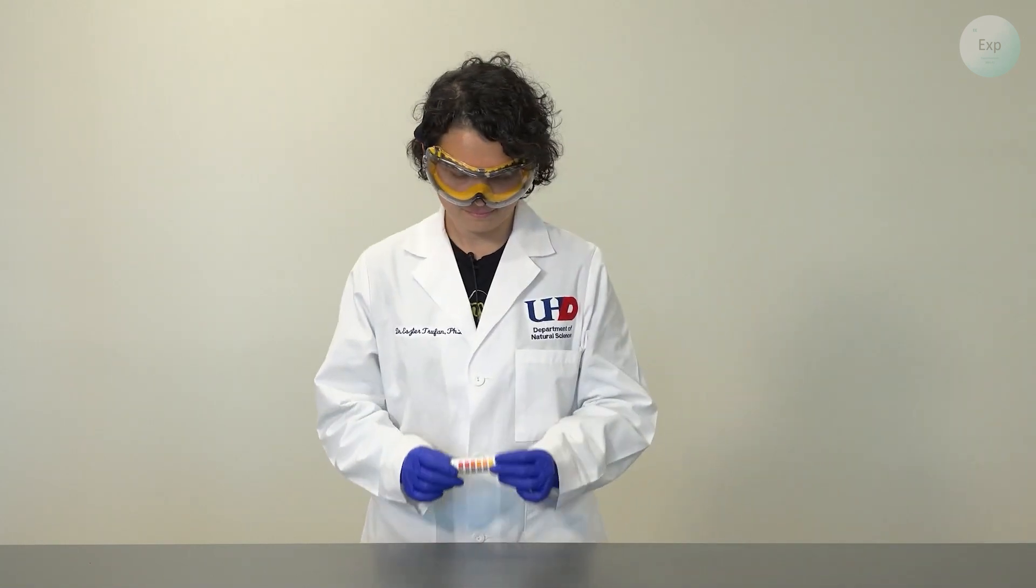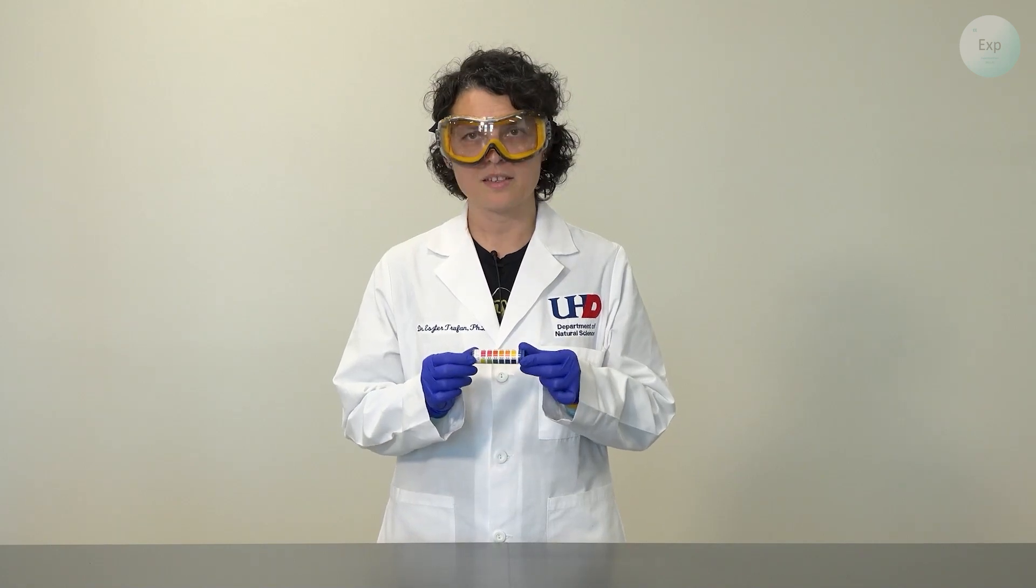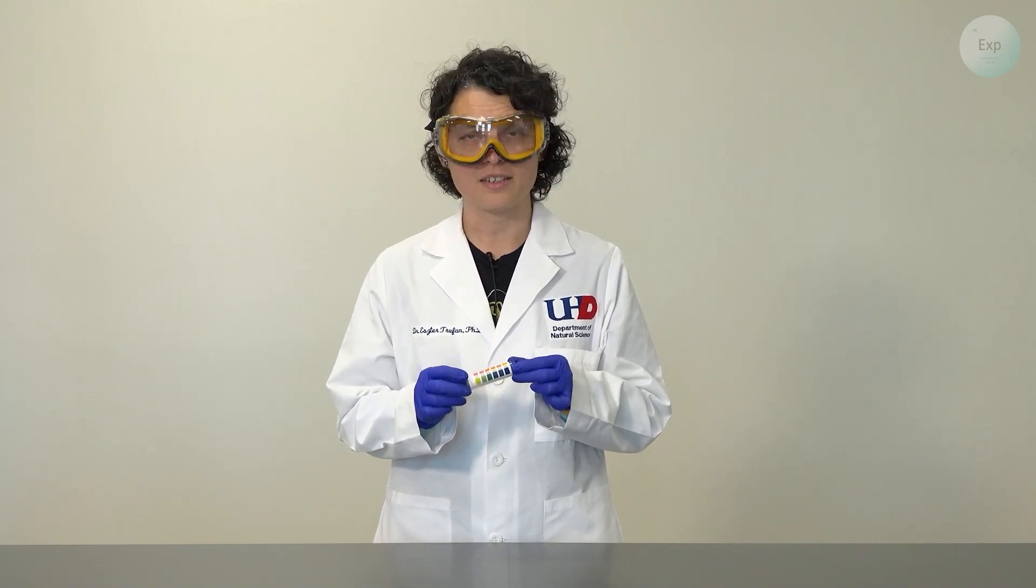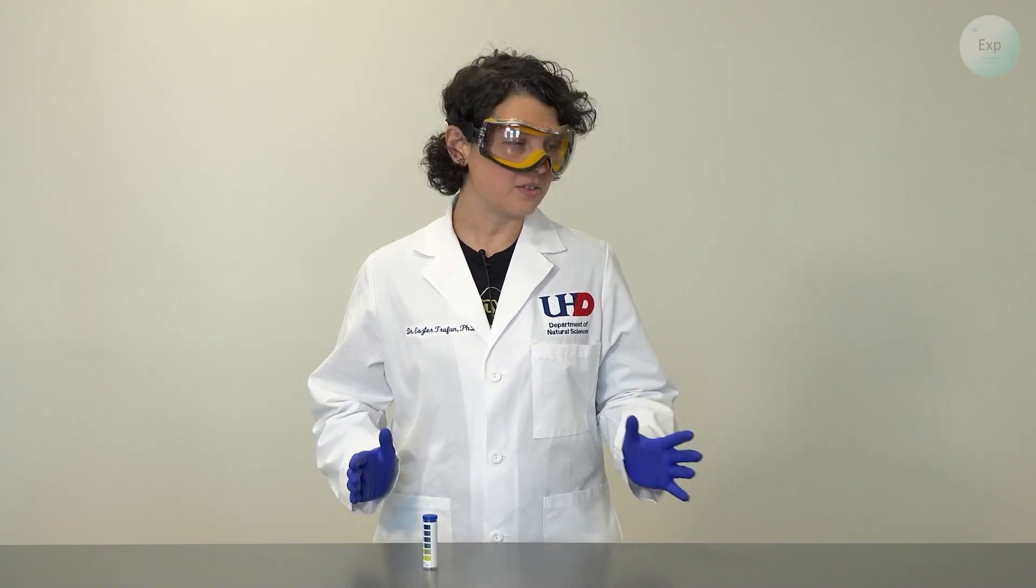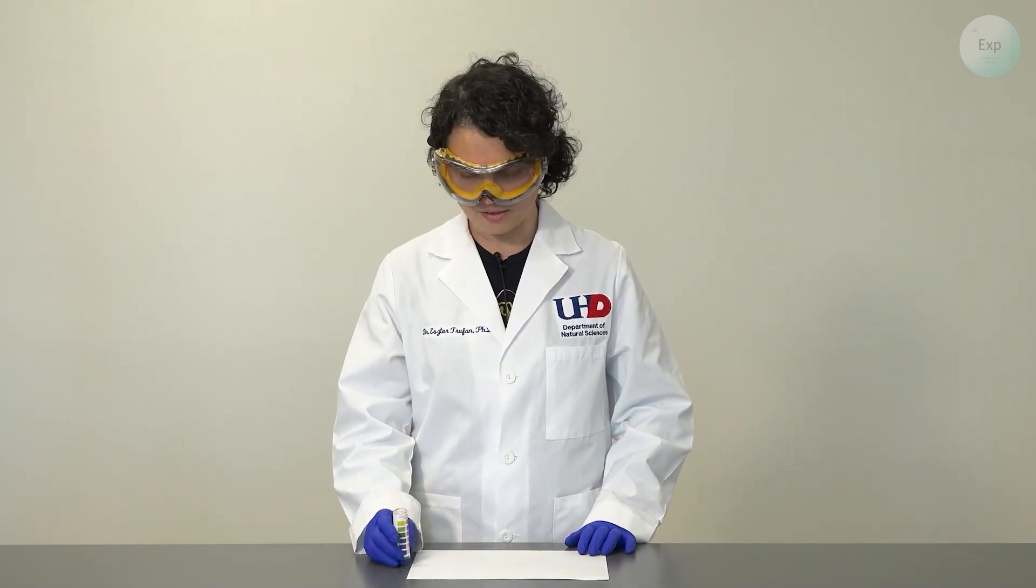For the experiment we're going to need pH paper and it usually comes in a small container with a scale that is printed on its side. We're also going to use a white piece of paper and this is just to help us more clearly identify the colors.